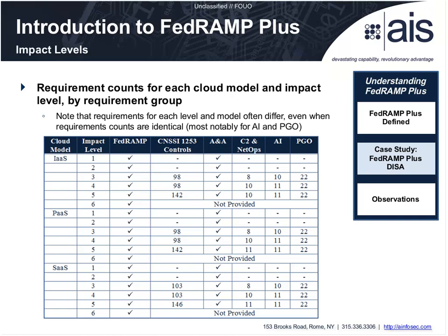This table provides an outline of the number of controls and requirements for every impact level and each service model. For example, within infrastructure as a service at impact level five, there are 142 specific CNSSI requirements that must be met. ANA requirements remain largely unchanged across impact levels. C2 and NetOps requirements increase slightly as impact level rises. Architectural integration requirements also increase. The number of requirements also varies by cloud model — for instance, software as a service at impact level three has five more requirements than infrastructure as a service at impact level three, to address specific application security concerns.